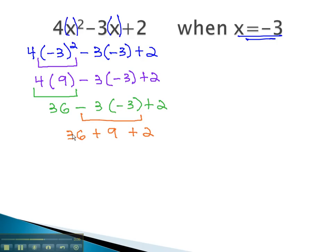We can finish by adding left to right. 36 plus 9 is 45, plus 2. And finally, 45 plus 2 is 47. This problem is now complete.